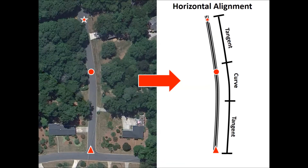The overhead aerial view of the roadway is shown on the left and the simplified roadway alignment is shown on the right. Each end of the roadway is a tangent and they're connected with a horizontal curve. In the horizontal perspective, a roadway is primarily comprised of tangent or straight sections which are smoothly connected by curves. The horizontal curves are used to provide drivers with the transition from one tangent to the next, and are typically simple curves which are the arc of a circle.